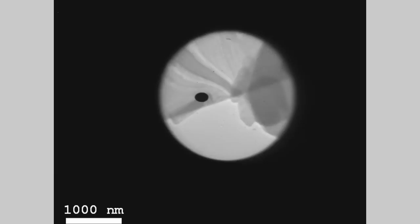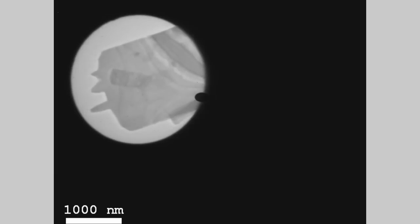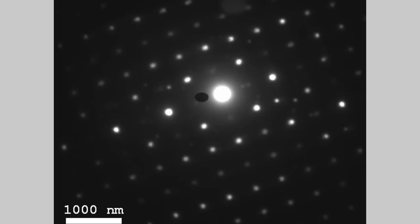If we want to make electron diffraction out of this, then we use the selected area aperture. And then we select the region of interest. Go to diffraction mode. And you see the diffraction pattern. And molybdenum trioxide is almost simple cubic in its structure. So we suspect to see some kind of square shaped pattern. As we can see in this image.